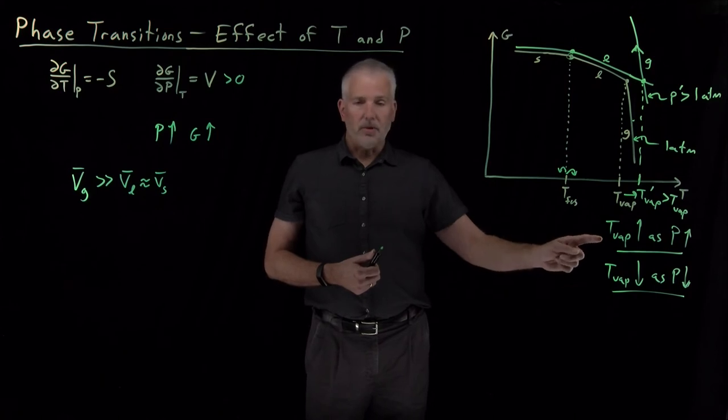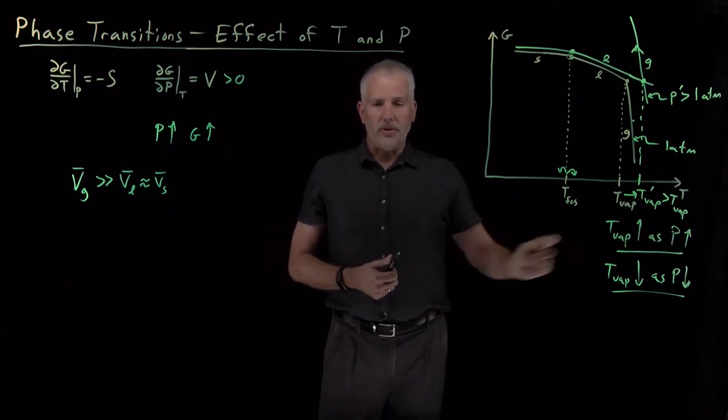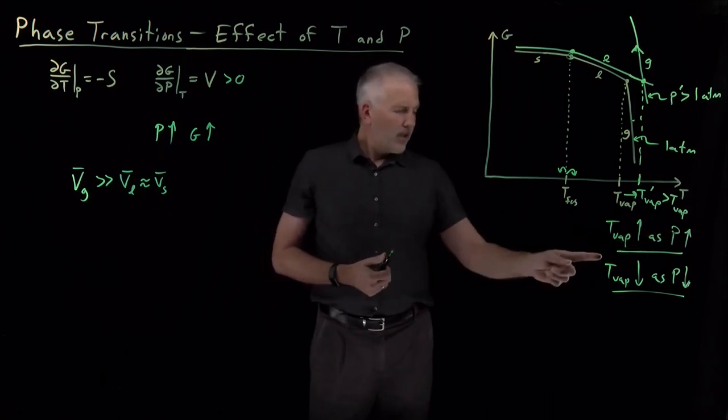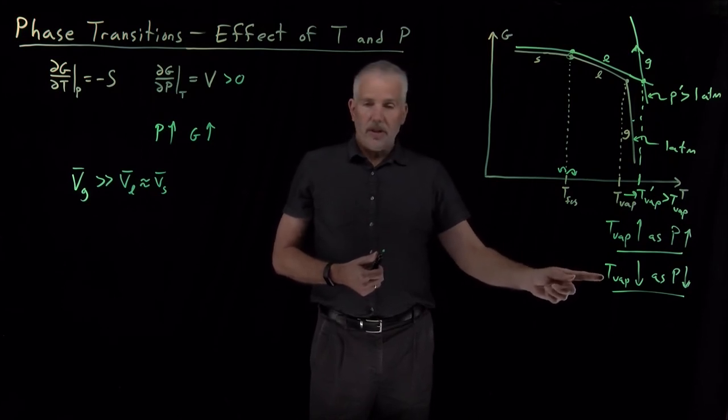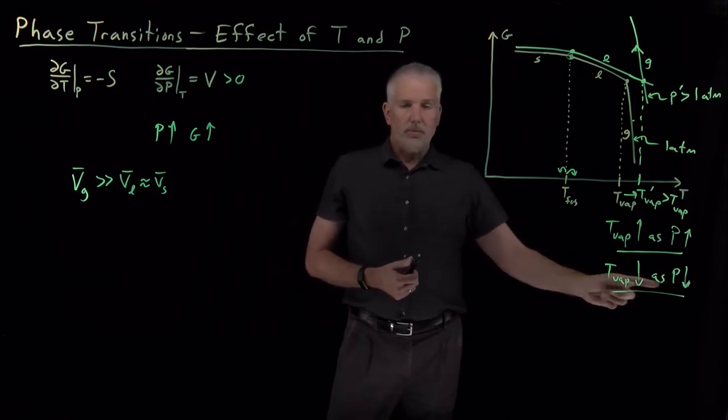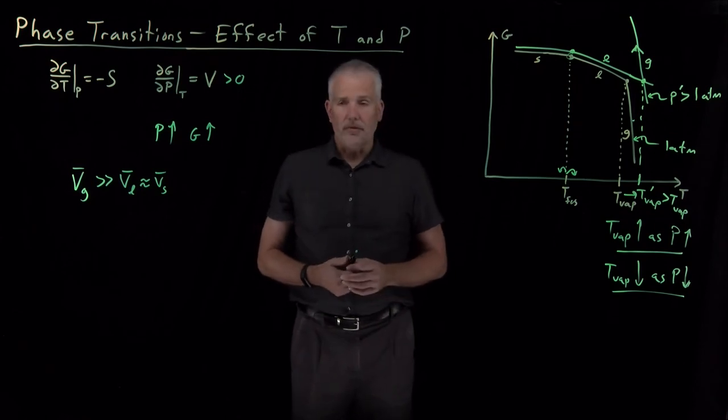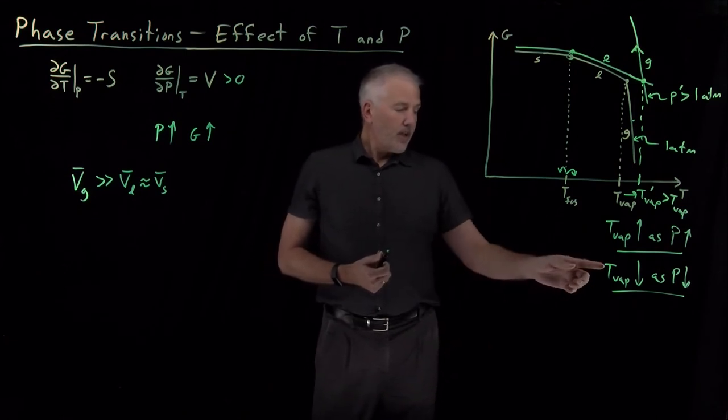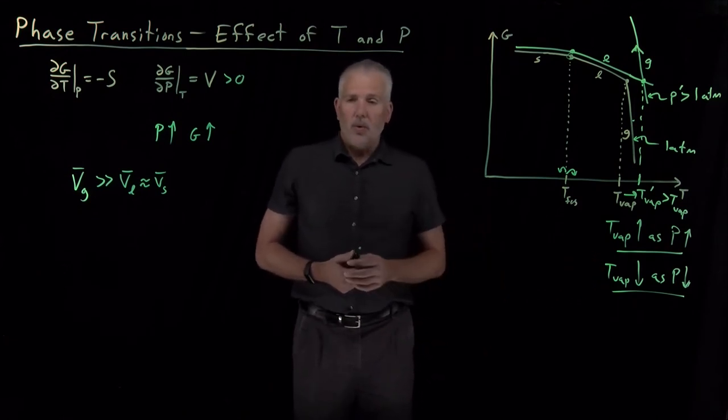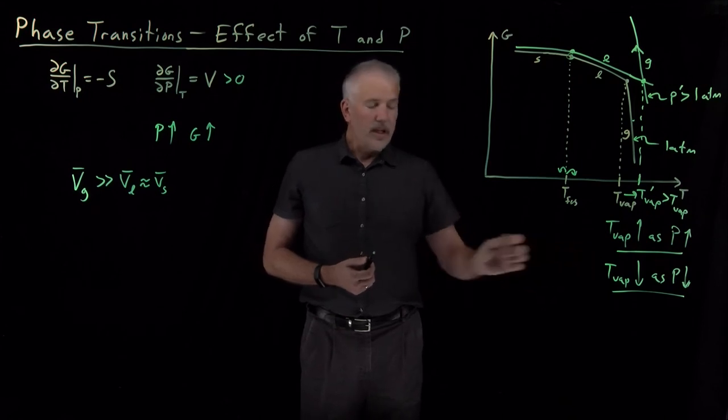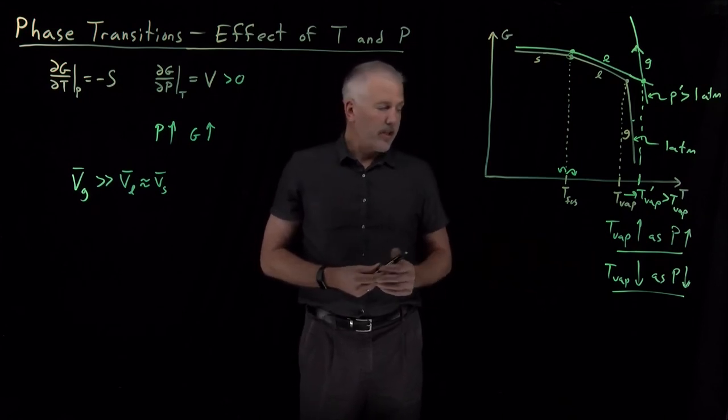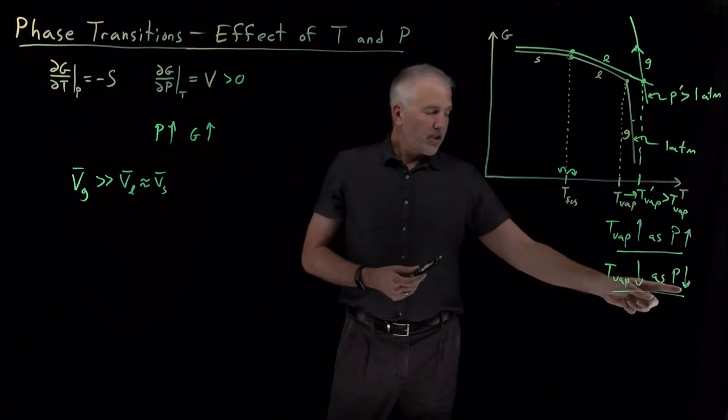So that the boiling point of water is increased above 100 degrees Celsius or 212 Fahrenheit, so that allows the food to cook much faster at that increased pressure. So a pressure cooker is a practical example of how we increase the boiling point when we increase the pressure. An example where you might have experienced a decrease in the boiling point when you decrease the pressure would be at altitude. If you go hiking or camping, let's say on a mountain that's at a relatively high altitude, or even try to boil water when you're on an airplane flight.